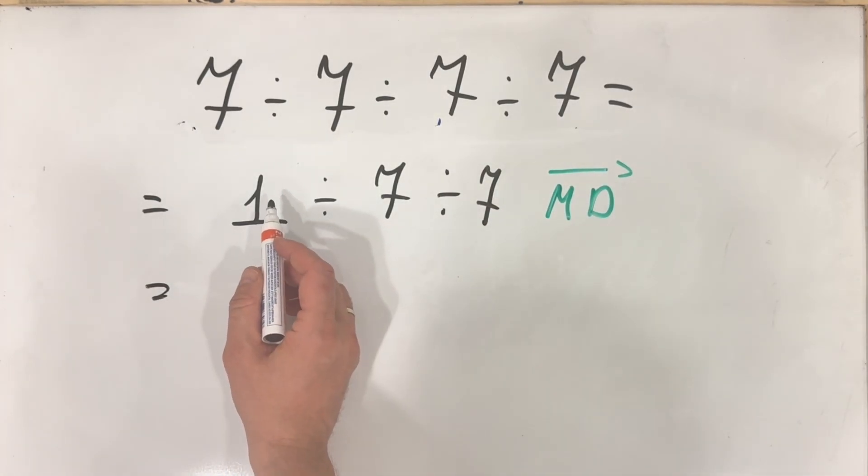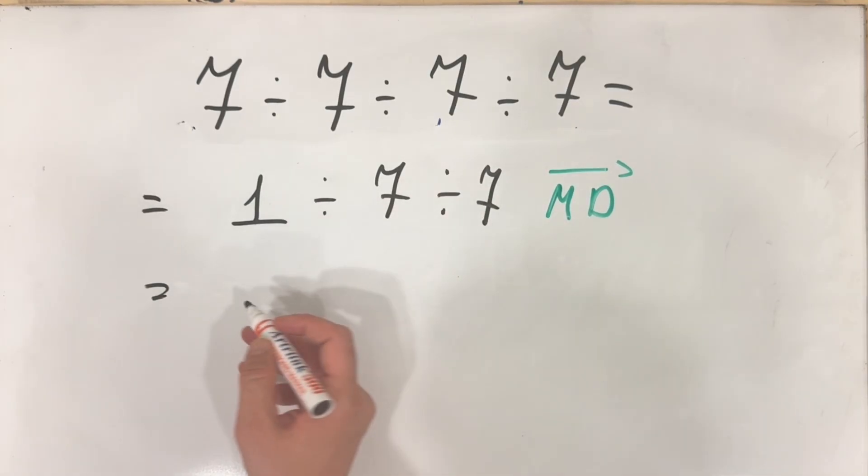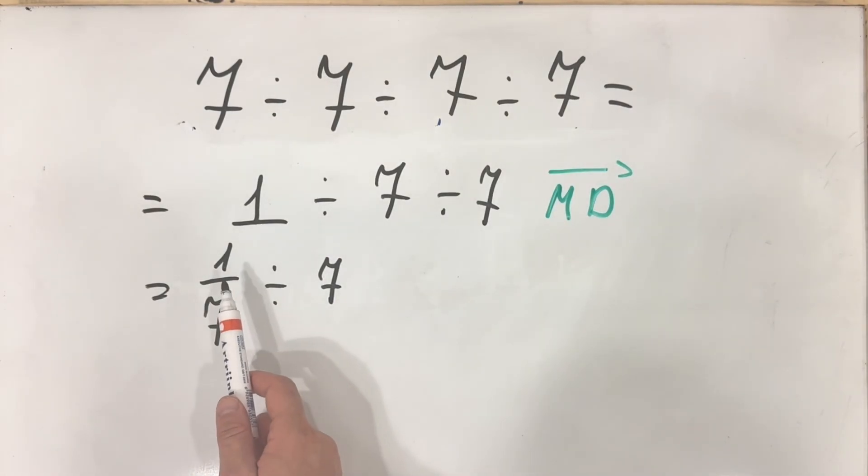So what we get? We get 1 divided by 7 is 1 over 7 divided by 7. So how to divide a number from a fraction.